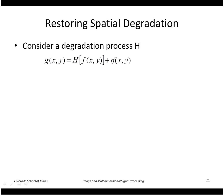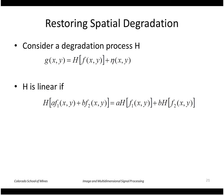Here is our original image F. We apply our process H and add noise. We'll consider processes that are linear — meaning multiplying the input by a constant gives a result multiplied by that same constant, and applying the process to the sum of two inputs gives the sum of applying the process to the two individual pieces.